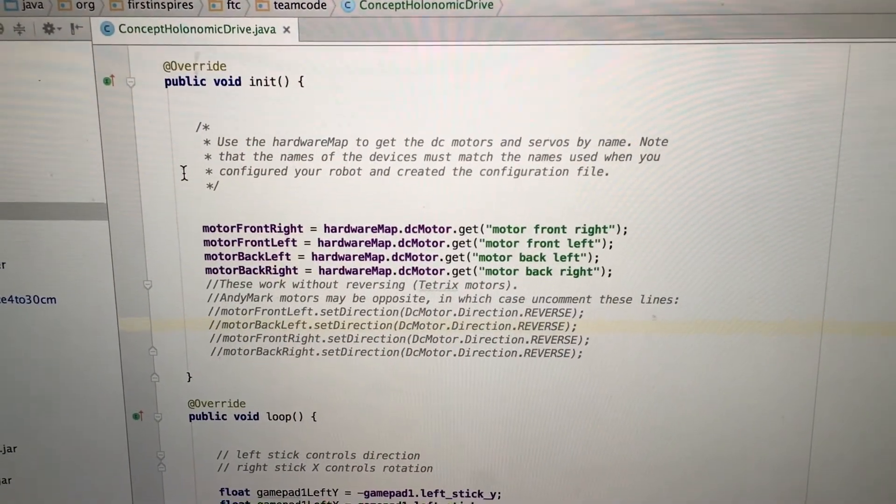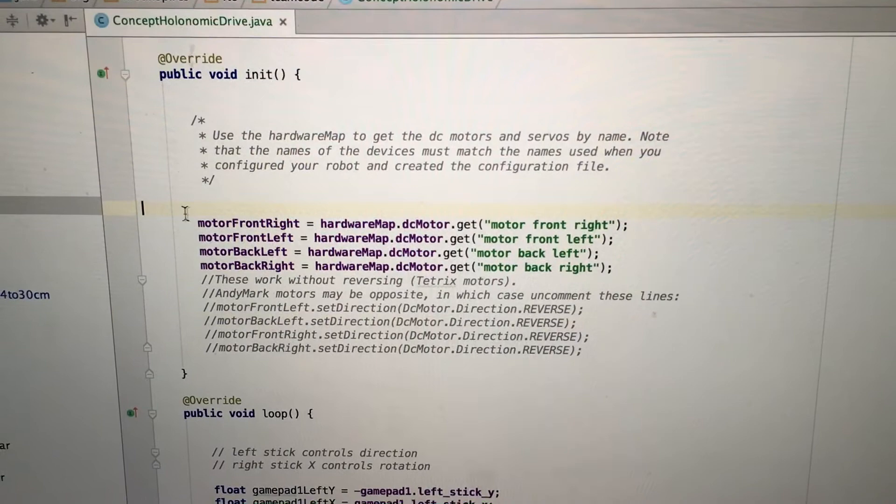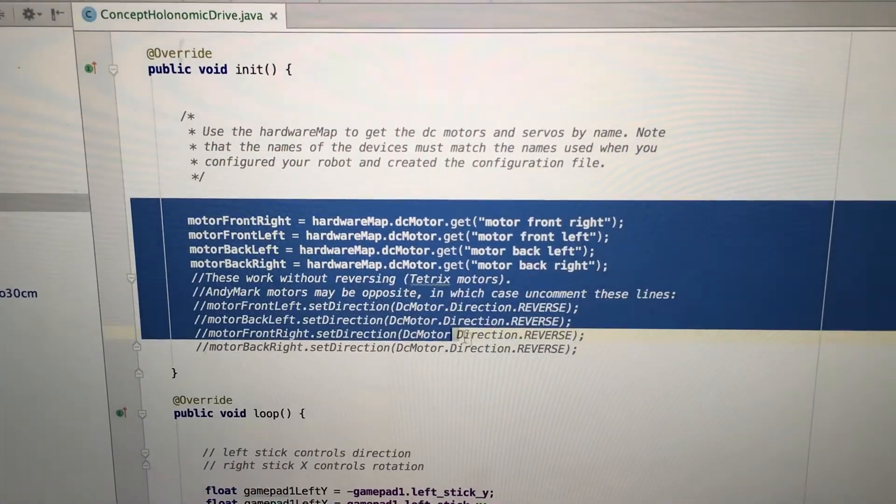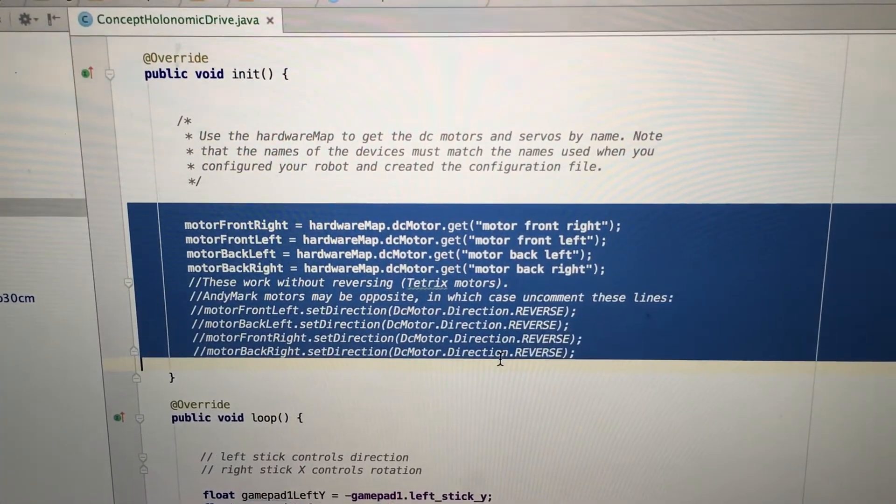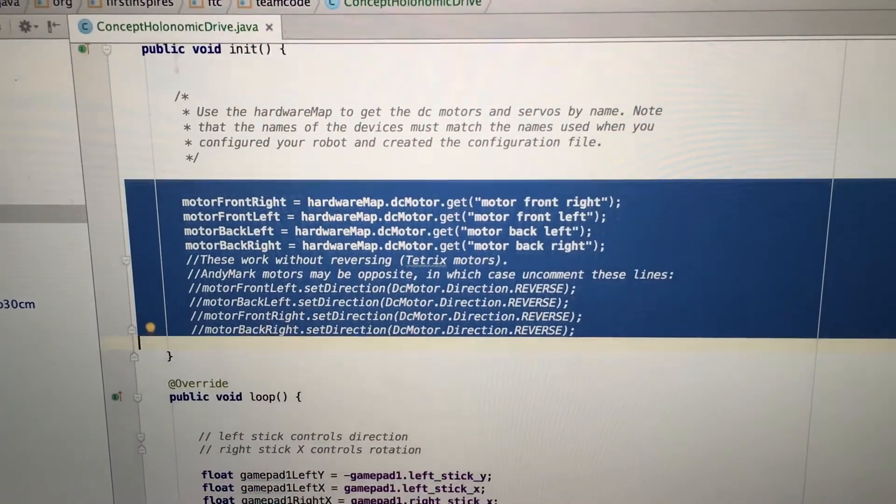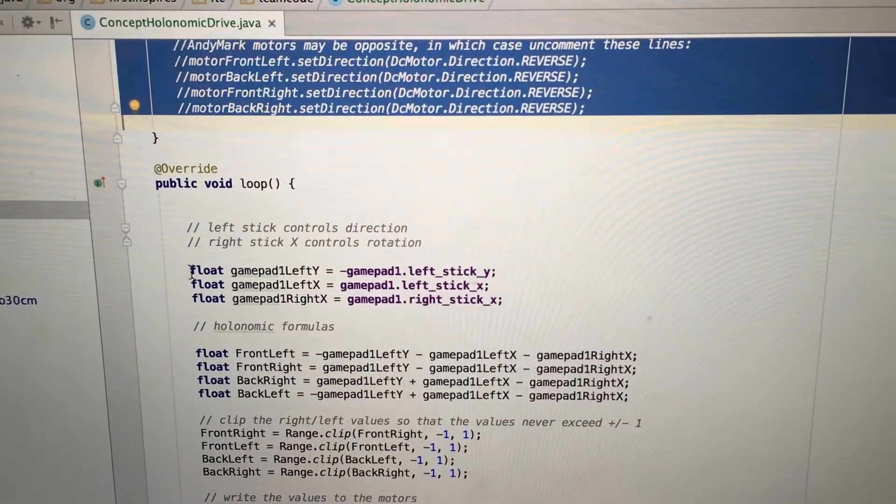Let's take a look at the source code. Up here is where we get our motors from the hardware map. Then down here, we read our joysticks.